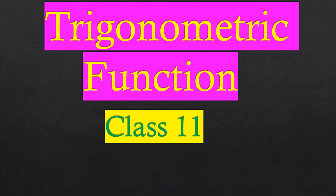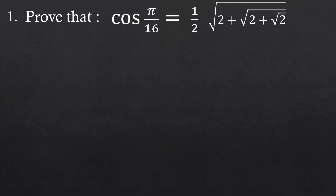Hi, today I am going to solve a unique problem of trigonometric functions for class 11. We have to prove that cos(π/16) is equal to half into root over 2 plus root over 2 plus root over 2. Before we begin, let us learn a trigonometric identity we already learned in class 10.